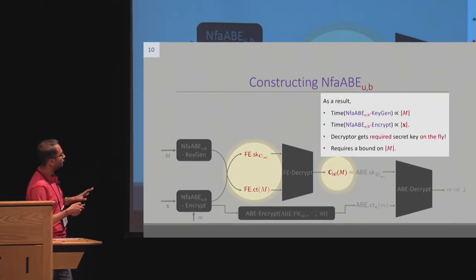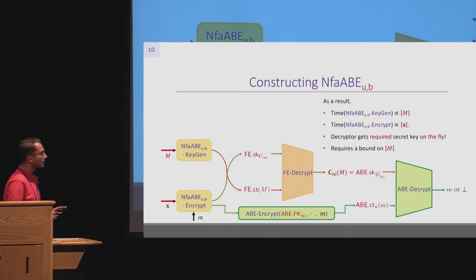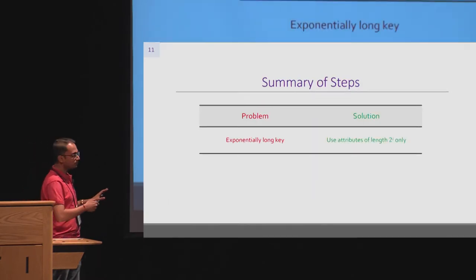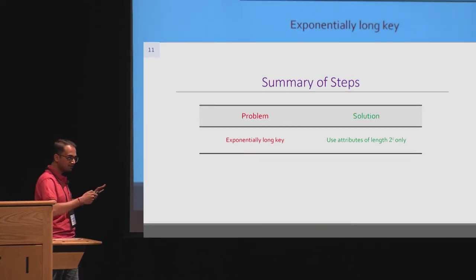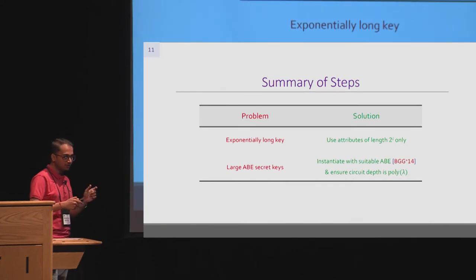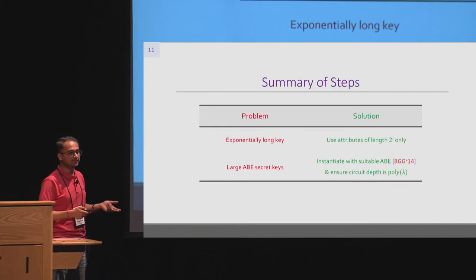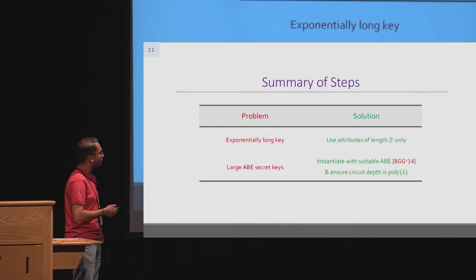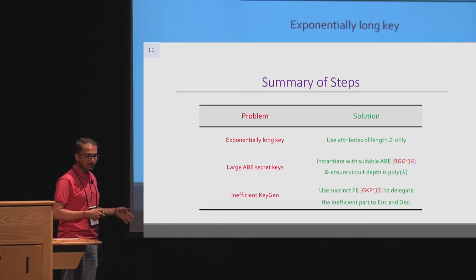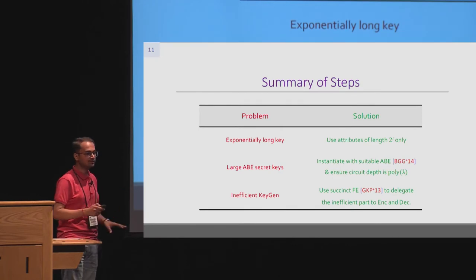To summarize the U,B construction: we had an exponentially long key, fixed by using attributes of length 2^i; individual ABE secret keys could be too large, fixed by using a suitable ABE scheme ensuring circuit depth is polynomial in the security parameter; and we had an inefficient key generation, fixed by using the succinct FE scheme to delegate the inefficiency to encryption and decryption.